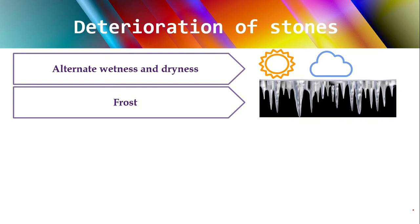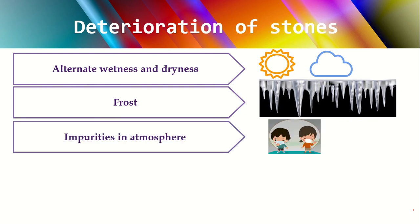The second cause is frost. Generally in hill stations or very cold places, there will be some moisture present in the atmosphere, and this moisture will be deposited in the pores of the stone. At freezing point, this moisture will freeze, and by this process it expands in volume — therefore the stone will start splitting up. This is also one of the reasons for decaying.